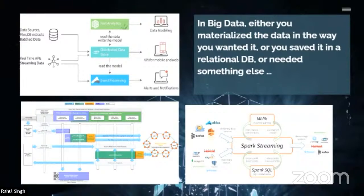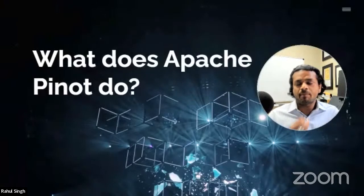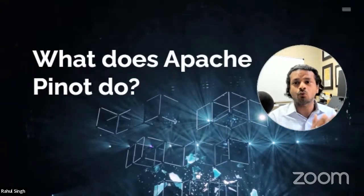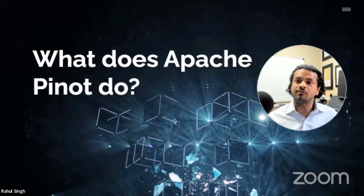There are other databases like MemSQL — now called SingleStore — that allow analytics at scale automatically. What we're really talking about is people with tons of data in Cassandra or Parquet files who want that data queried quickly. Apache Pinot provides a standard way of getting analytics at scale without reinventing the wheel. When we look at the architecture, you'll see how it's made.